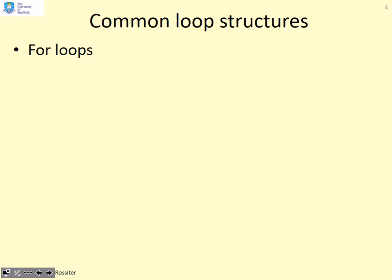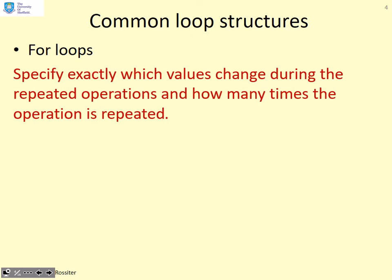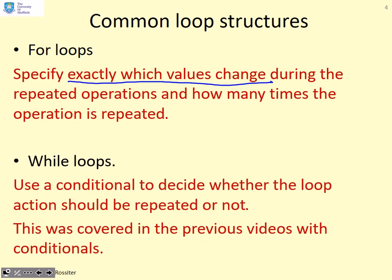There's two common loop structures: for loops and while loops. With a for loop you specify exactly which values may change during the repeated operations and how many times the operation is repeated. While loops use a conditional to decide whether the loop action should be repeated or not. You may remember we looked at while loops in the previous resource, MATLAB Basics 8.